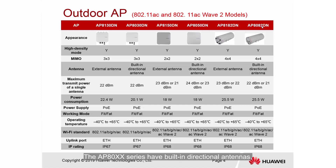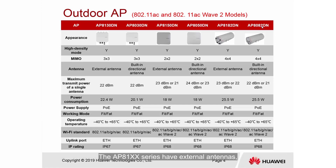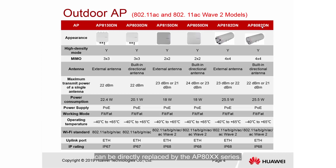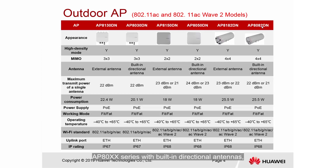The AP 80 series have built-in directional antennas with horizontal and vertical lobe widths of 60 degrees and 30 degrees respectively. The AP 81 series have external antennas, and the angle of external antennas can be 15, 30, 60, 90, or 360 degrees. In most cases, the AP 81 series with external directional antennas can be directly replaced by the AP 80 series. Therefore, in outdoor scenarios, two types of APs are available: AP 80 series with built-in directional antennas and AP 81 series with 360-degree omnidirectional antennas.